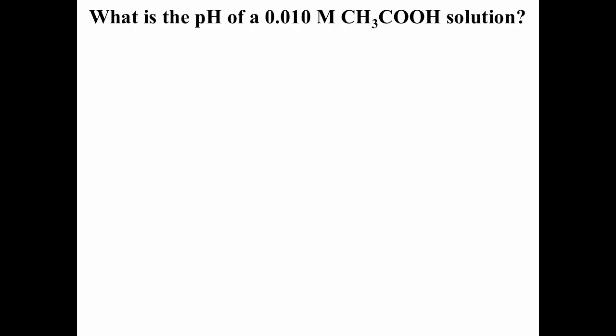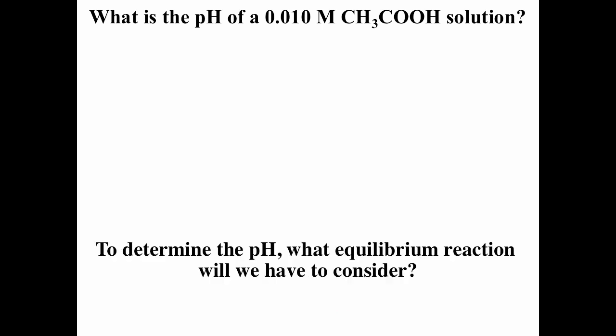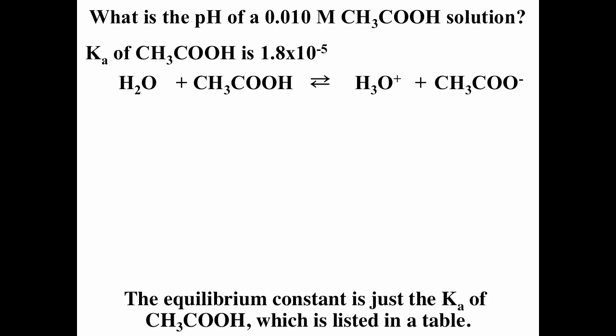For instance, if we're asked about the pH of a 0.01 molar solution of acetic acid, we first ask ourselves: is that a strong acid or weak acid, a strong base or weak base? Acetic acid is an organic acid, and organic acids are weak acids, so we are going to have to do an equilibrium problem. The equilibrium reaction is the Ka reaction for the acid: acetic acid going to hydrogen ion plus acetate ion — or equivalently, water plus acetic acid going to hydronium ion plus acetate ion. The Ka is 1.8 × 10⁻⁵, which we can get from a table.